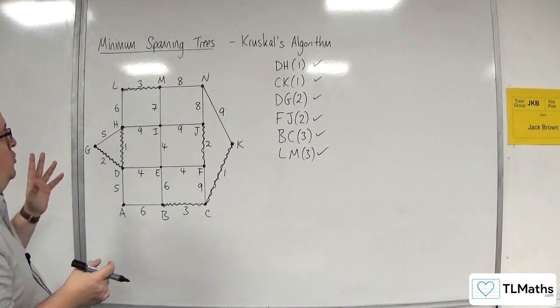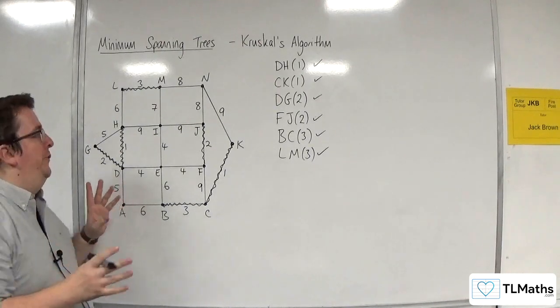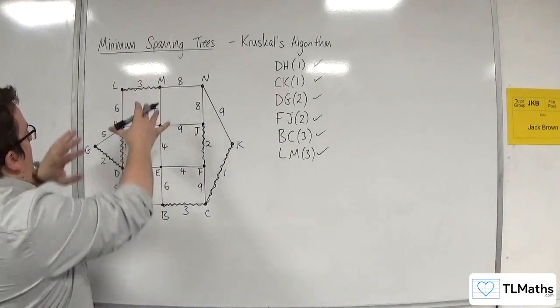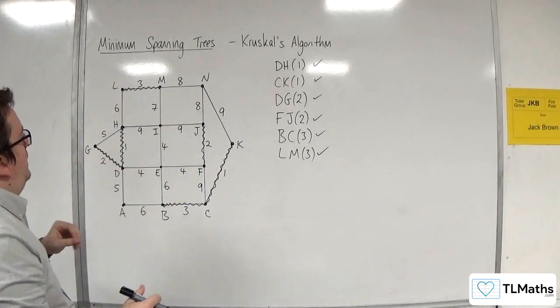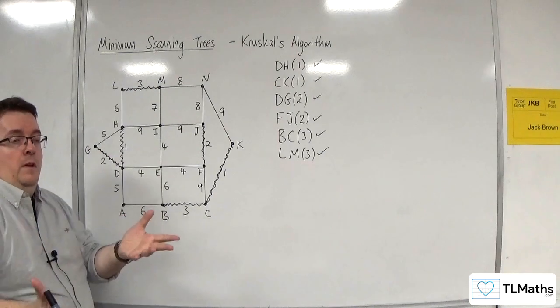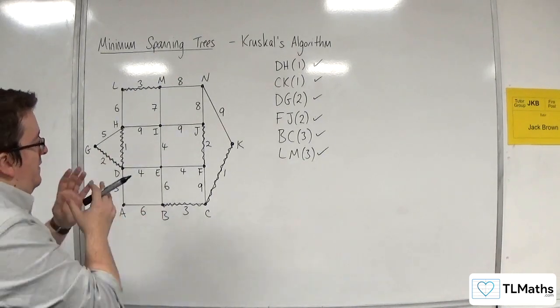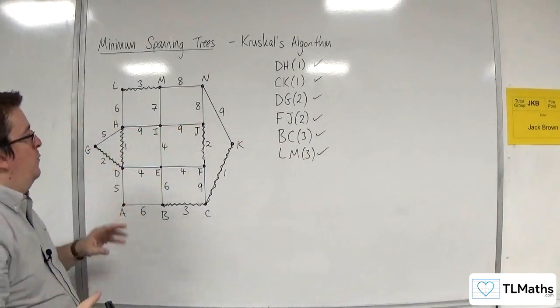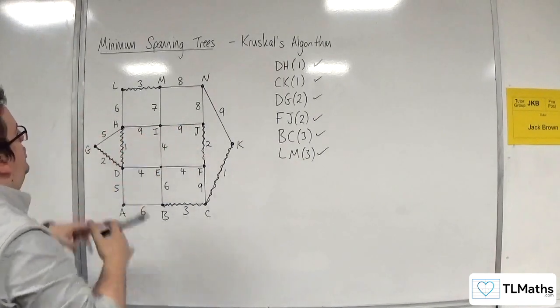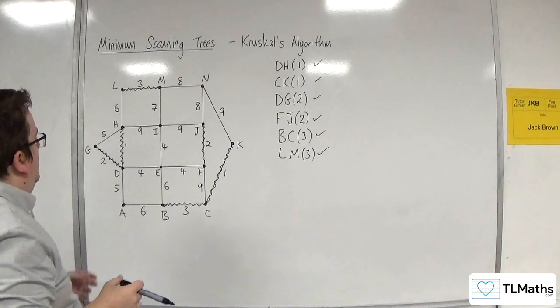This is quite a good example because it's showing you kind of how Kruskal's builds. You can see edges appearing all over the place, which is going in contrast to Prim's, if you've met it. That grows out. Whereas this one, just edges appear all over the shop.